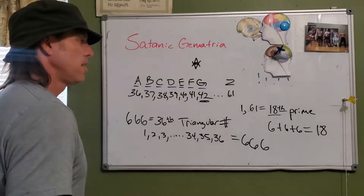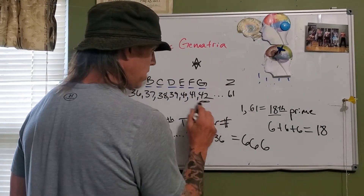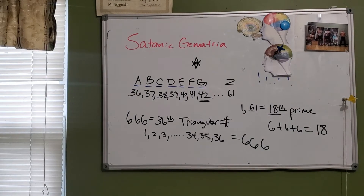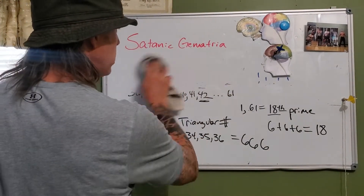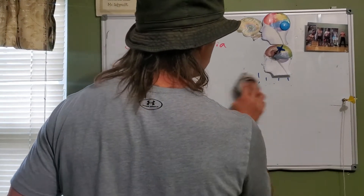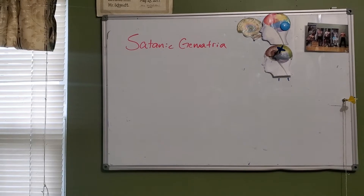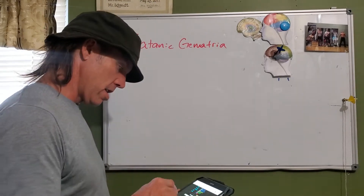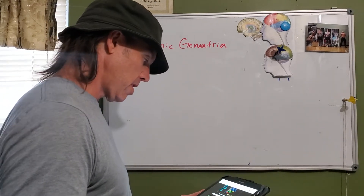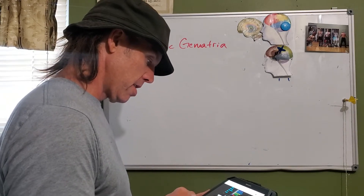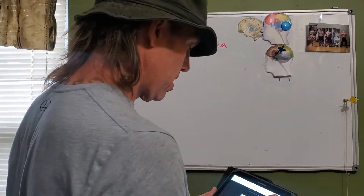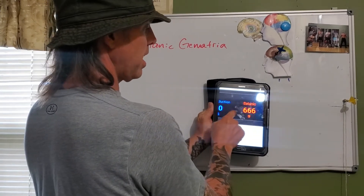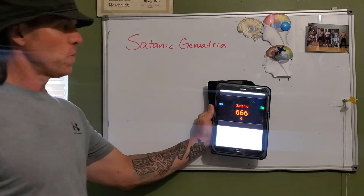And 42 is a number stamped all over black people and black history. Now with that said, I'm going to show you right here — we're going to key in 'satanic gematria' and as you can see that phrase is right there. When we go to satanic, what is it? It's 666.